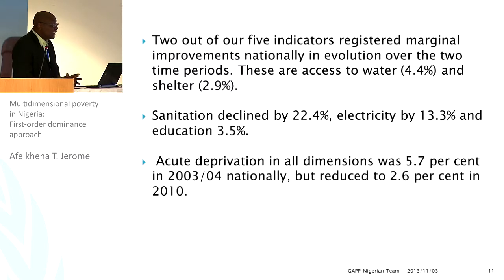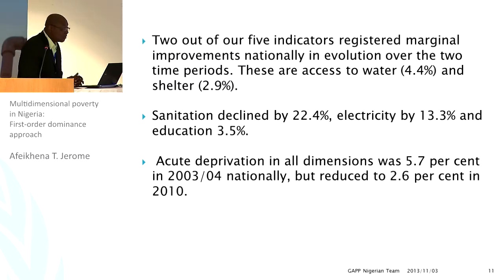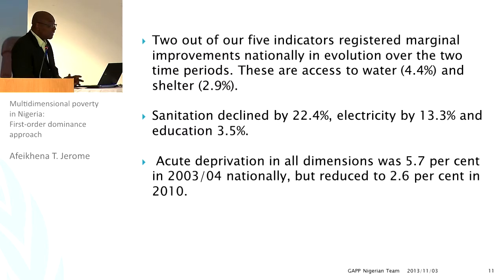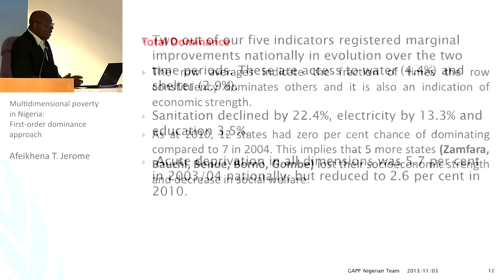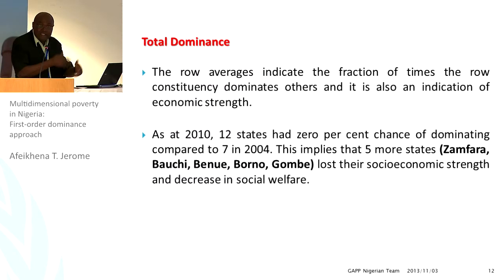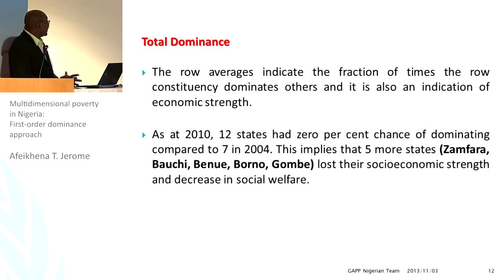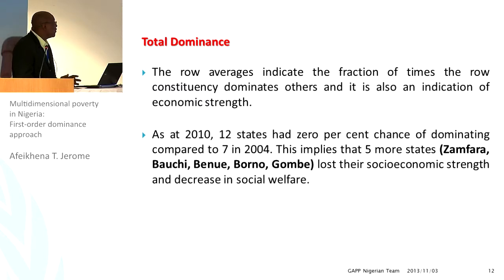Whereas sanitation, electricity, and education declined between 2003/2004 and 2009/2010. The acute deprivation dimension, while 5.7% in decline marginally. Looking at the dominance results from the methodology, you find that as at 2010, 12 states had 0% probability of dominating, compared to several states which we had in the 2004 results. This implies that 5 more states lost their socioeconomic strength.